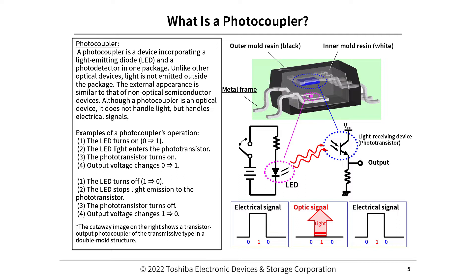Examples of a photocoupler's operation. When the LED turns on (0 to 1), LED light enters the phototransistor, the phototransistor turns on, and the output voltage changes from 0 to 1. When the LED turns off (1 to 0), the LED stops light emission to the phototransistor, the phototransistor turns off, and the output voltage changes from 1 to 0.